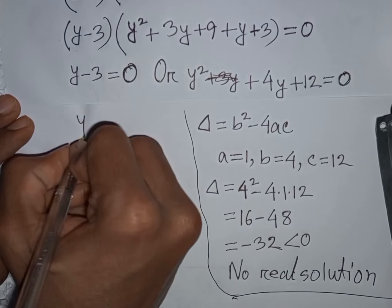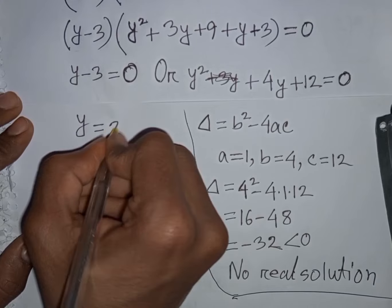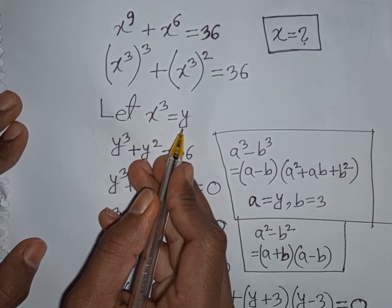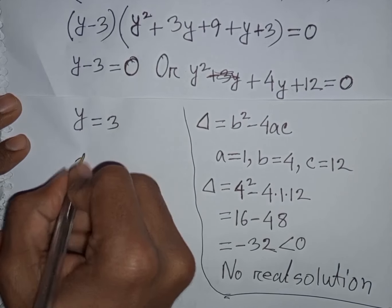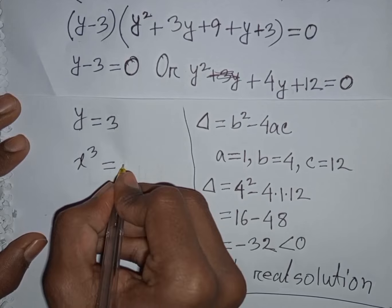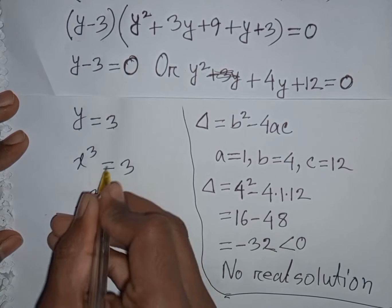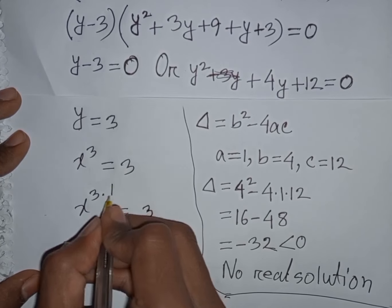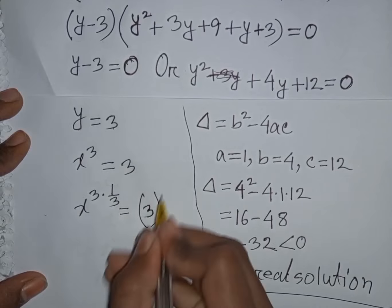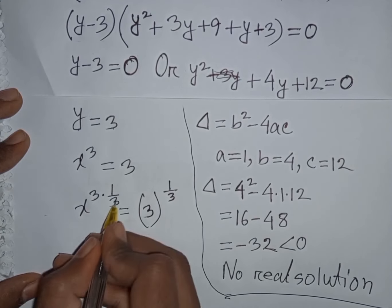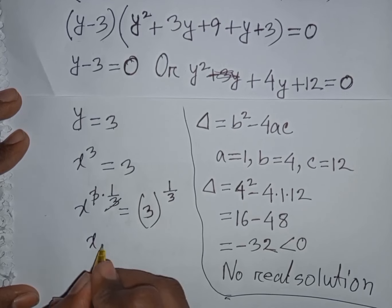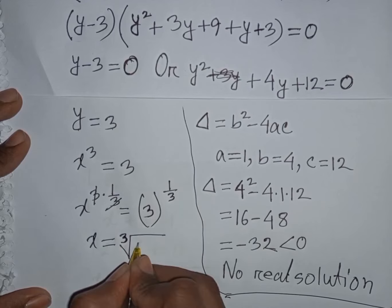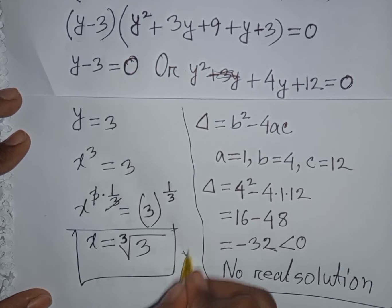From y minus 3 equals 0, we get y equals 3. But remember that x power 3 was substituted by y, so x power 3 equals 3. To find x, we apply the power of one-third to both sides. The exponents cancel on the left, giving x equals 3 to the power of one-third, which is the cube root of 3. This is our final answer.